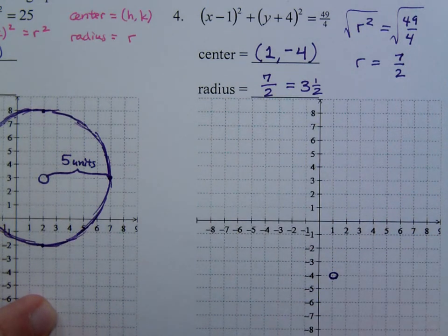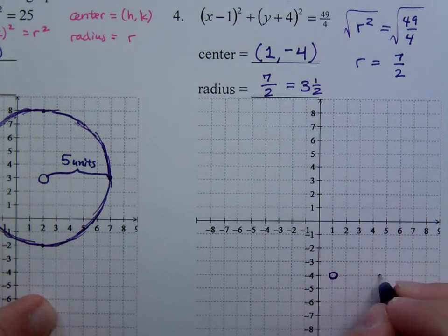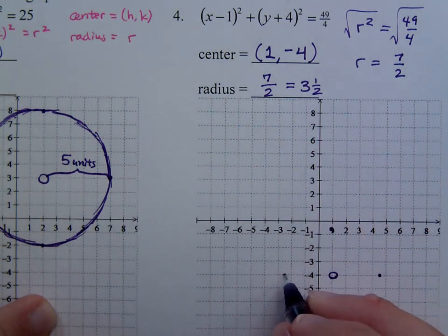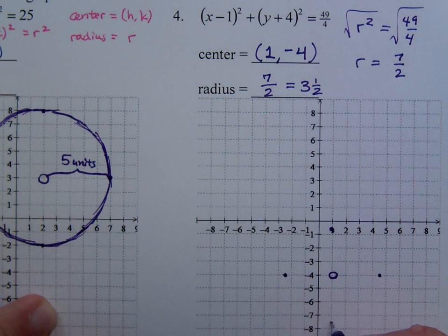And then I'm going to go 3 and a half in every direction. So 1, 2, 3 and a half here. 3 and a half here. 1, 2, 3 and a half here. And then down 3 and a half.